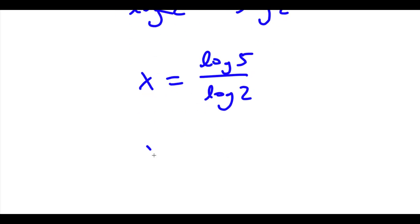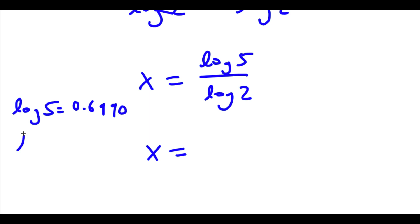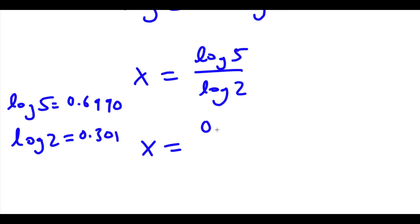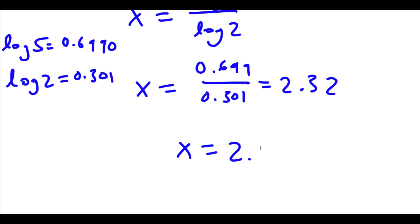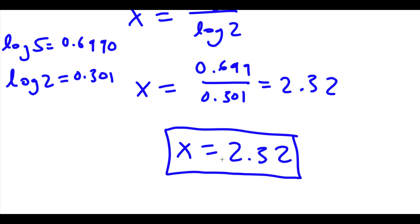Now log 5 is equal to 0.6990 and log 2 is equal to 0.301. So now I have 0.699 over 0.301, and this is equal to 2.32. So x is equal to 2.32. This is our answer.